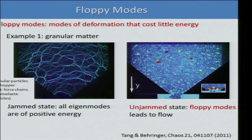On the right, if you calculate the eigenmodes, there are modes with zero eigenvalue, so that leads to the flow of these particles. The concept of floppy modes is very important in soft matter because it tells you about the critical state between a solid-like state and a liquid-like state. You can write down a harmonic form of the elastic energy in terms of displacements — I will talk more about that later.